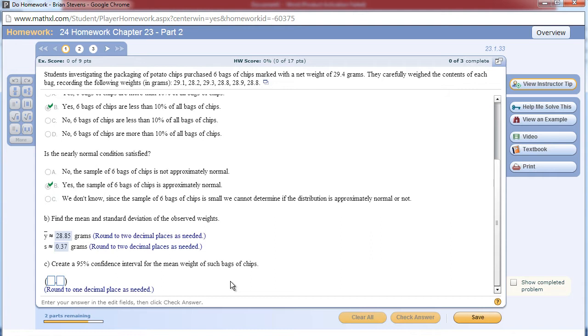So with this in mind, let's go ahead and go to stat, tests, and we need to go to T interval. Now we are going to select data, and we want to make sure the list where we put our numbers in is under list. So I have list L1, frequency 1, and c level equal to 0.95. This will automatically give me a 95% confidence interval. You can also solve this by hand using the equation I just showed you.